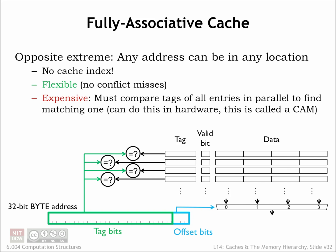A fully associative cache has a tag comparator for each cache line, so the tag field of every cache line in a fully associative cache is compared with the tag field of the incoming address. Since all cache lines are searched, a particular memory location can be held in any cache line, which eliminates the problems of address conflicts causing conflict misses.